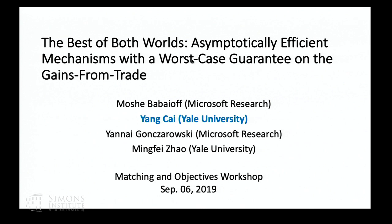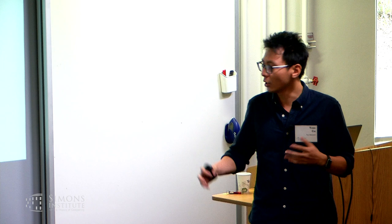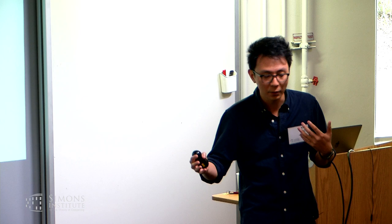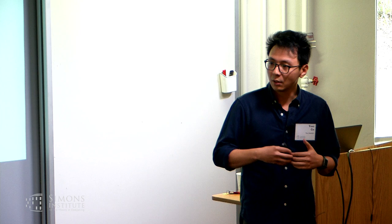I want to look at maximizing gains from trade in two-sided markets. In the literature there are essentially two lines of work, two types of guarantees. The first type I consider as asymptotic efficient mechanisms — these mechanisms look at the realized input, and if the input satisfies some nice conditions such as a large market condition, the performance is very good. In fact, if the size of the market grows, the performance converges to optimal. The issue is: what if this large market condition does not hold? There's no guarantee whatsoever there.